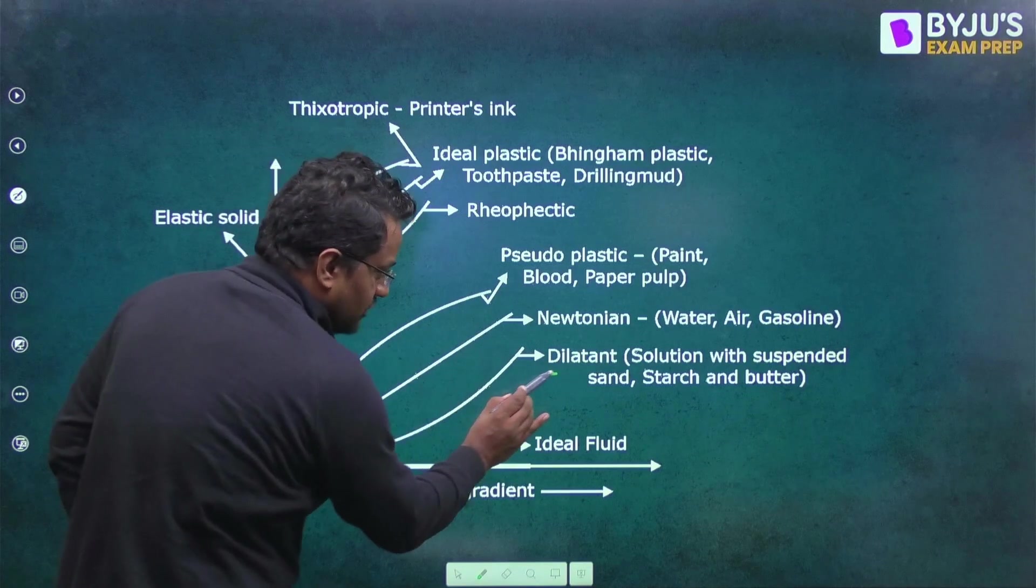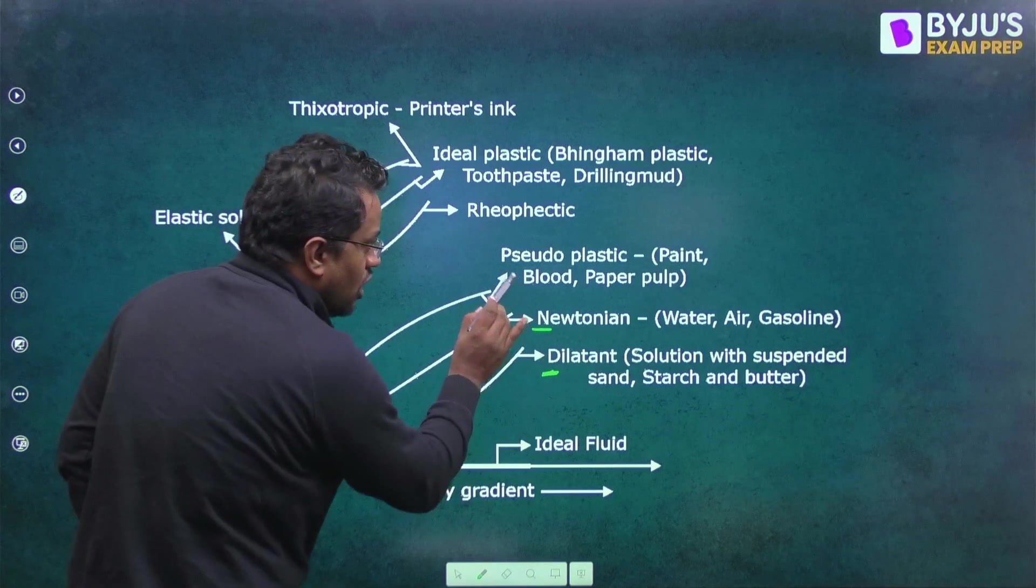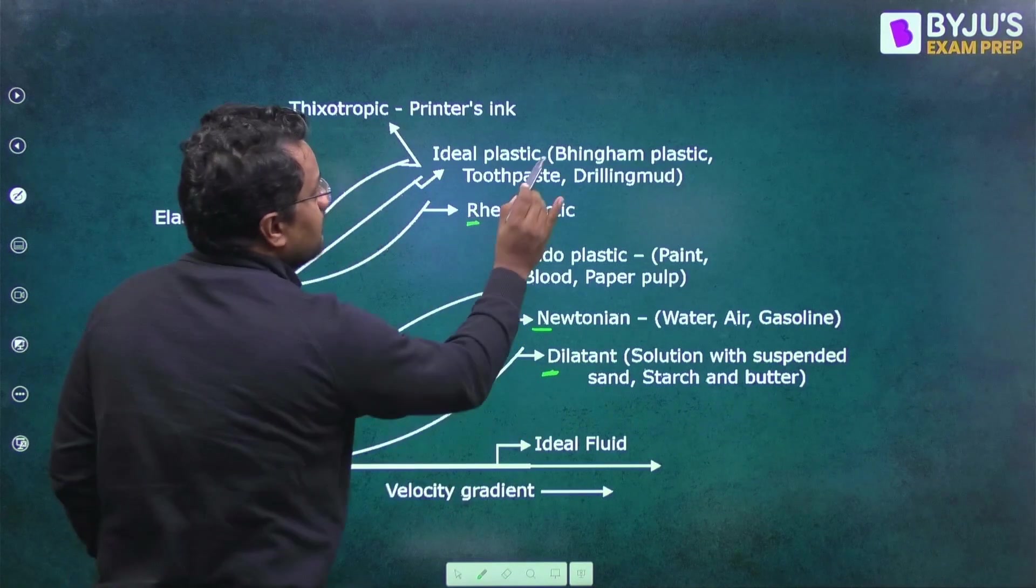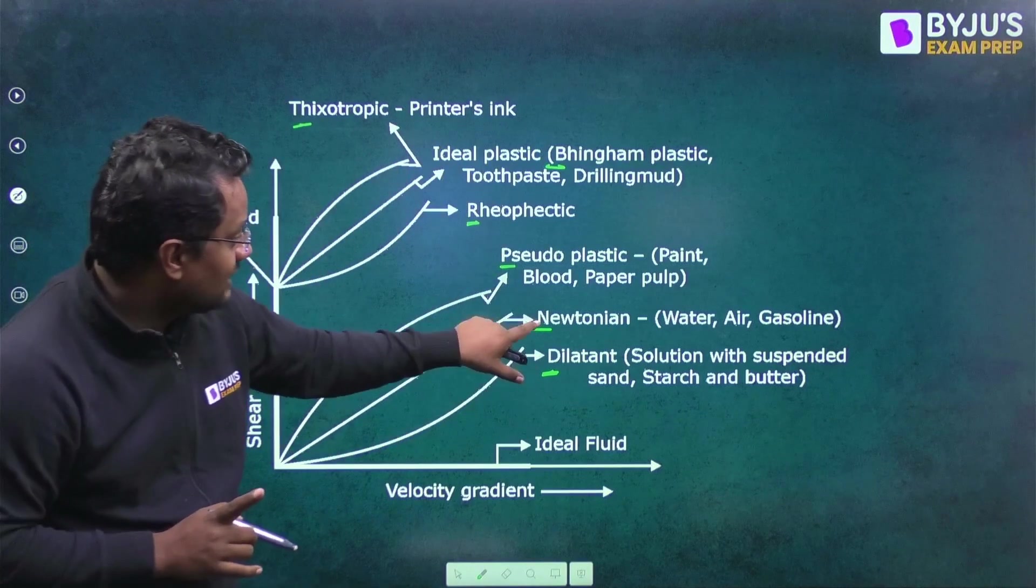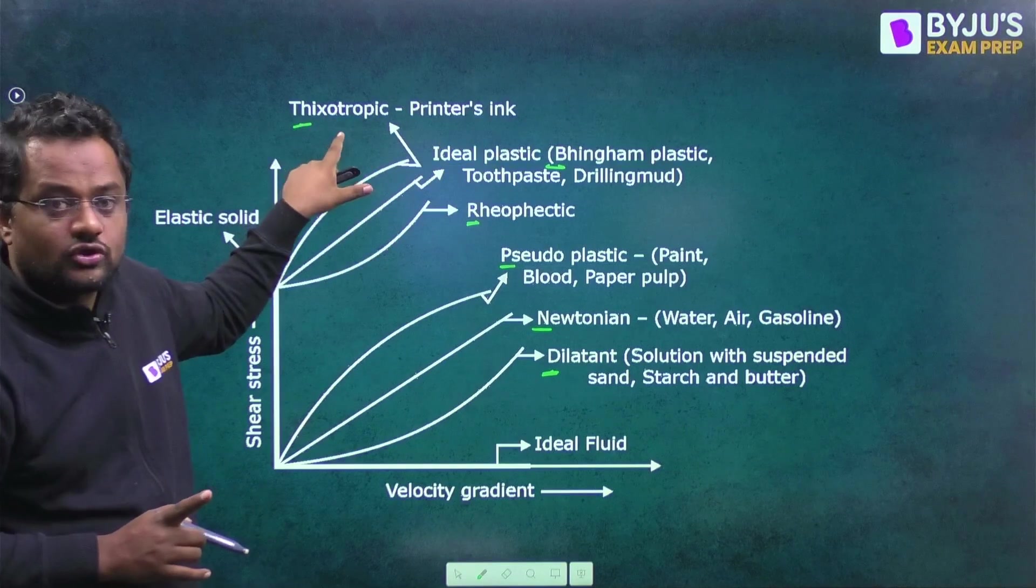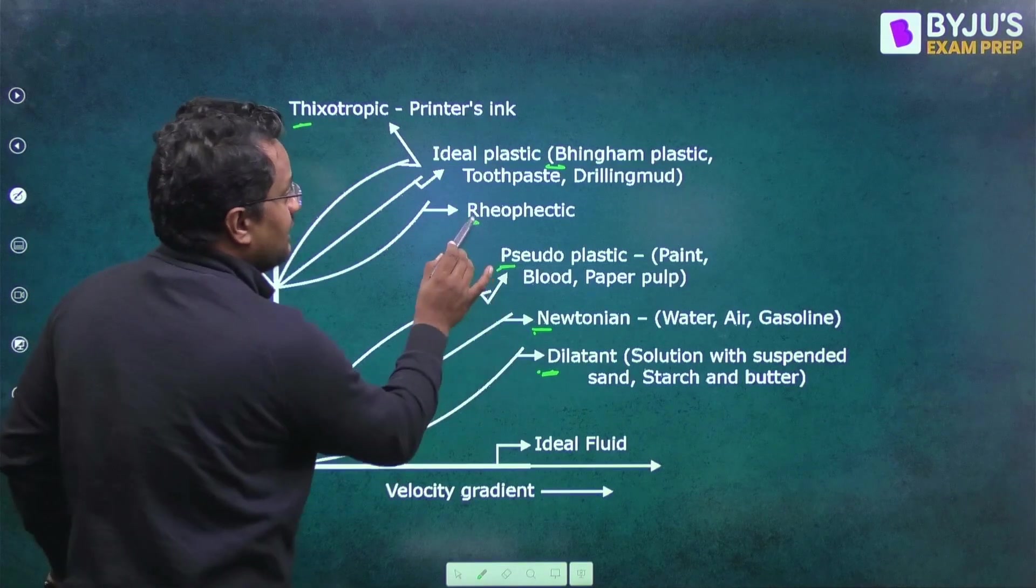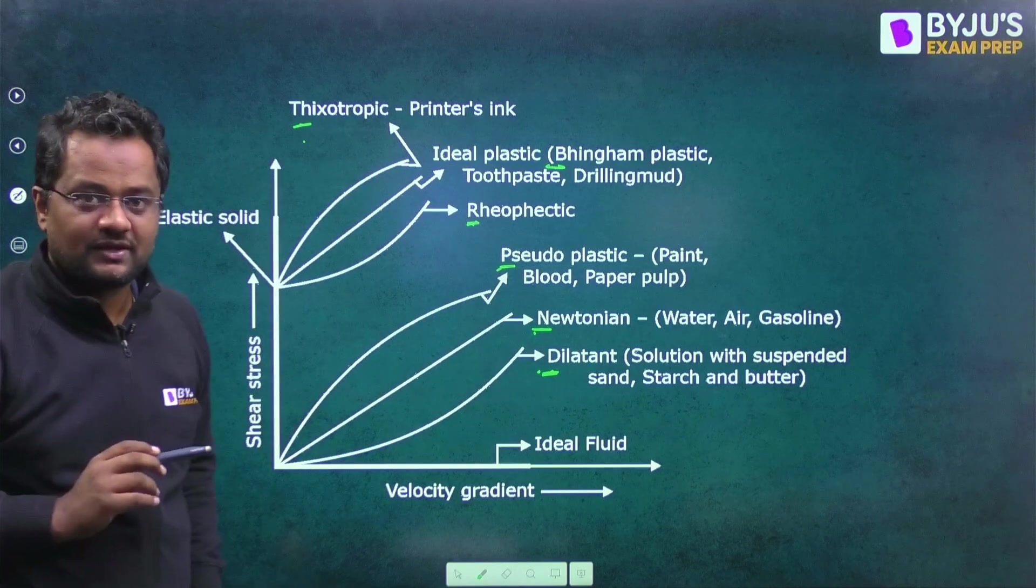So Ravi suna. Do not play Ravi before tennis. This is how you can learn Dilaton, Newtonian, Pseudo, Rheopectic, Bingham, Thixotropy. Do not play Ravi before tennis. Like this.